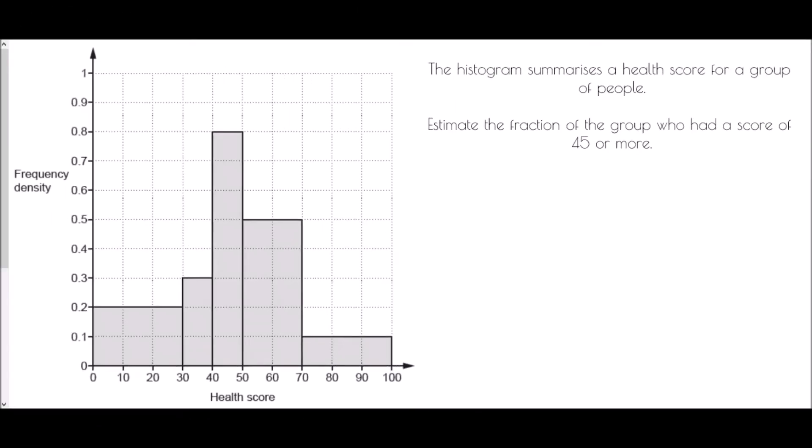Okay, so the first question gives us a fully formed histogram and it's a histogram which summarizes a health score for a group of people and we've been asked to estimate the fraction of the group who had a score of 45 or more.